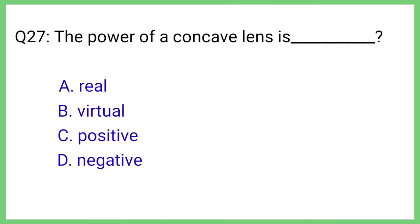Question No. 27. The power of a concave lens is. The correct answer is Option D. Negative.